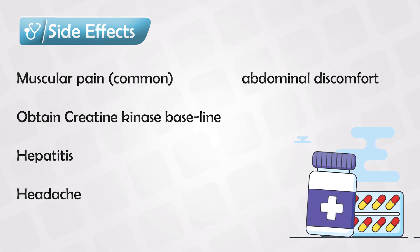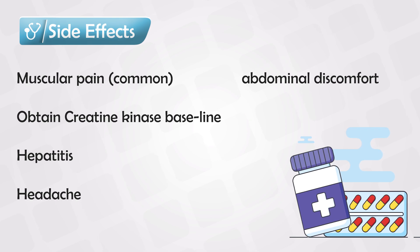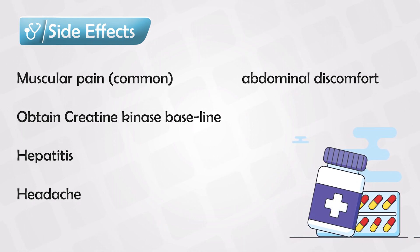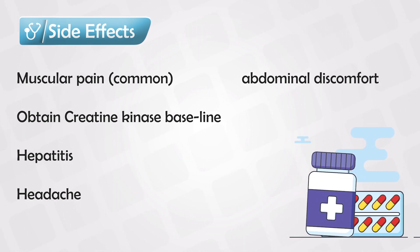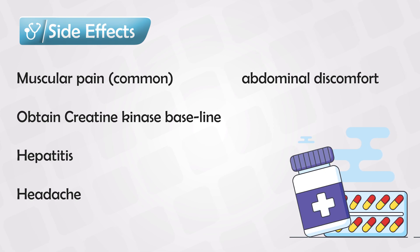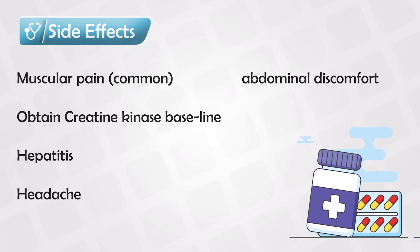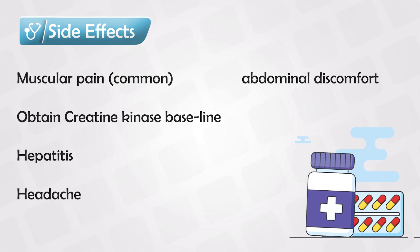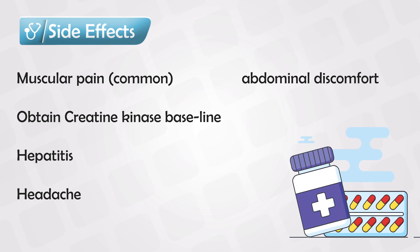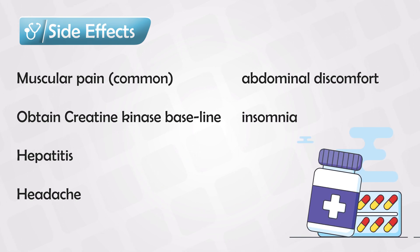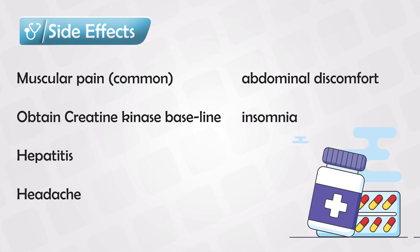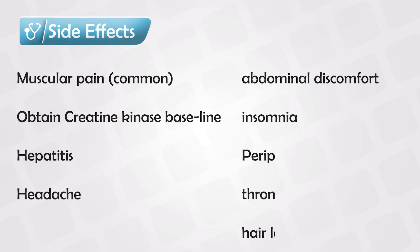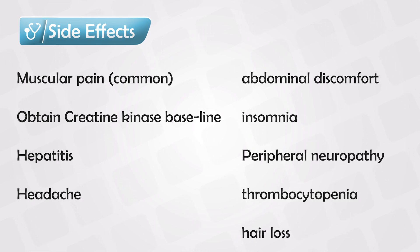A very rare complication is memory loss, and luckily this one is reversible — once the patient stops taking the medication, the symptom goes away. Trouble sleeping at night. Peripheral neuropathy, which translates to tingling or numbness in the fingers and toes.